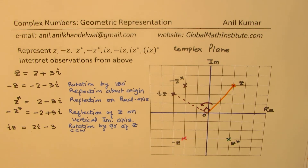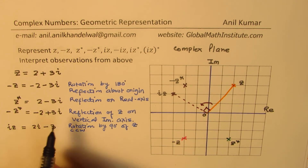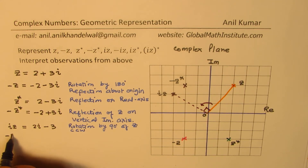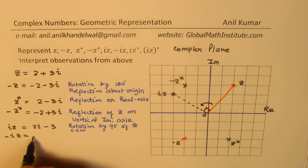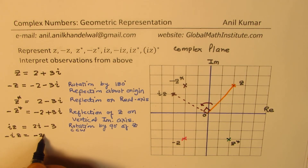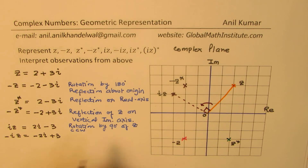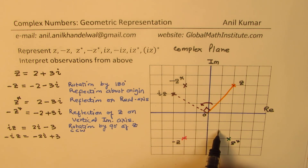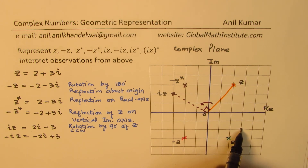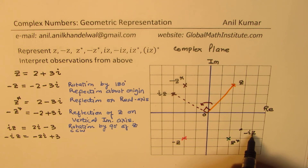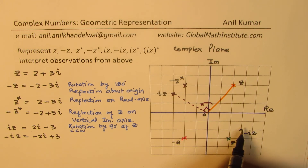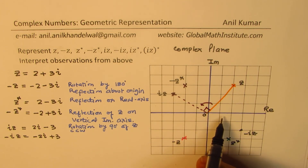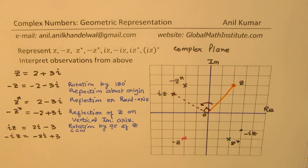Now let's see the position of minus iz. Minus iz will be minus 2i plus 3, which is 3 minus 2i. Minus 2i means 2 units down, and plus 3 means 3 units right. That is the position of minus iz. As compared to the original position, it is a clockwise rotation by 90 degrees.